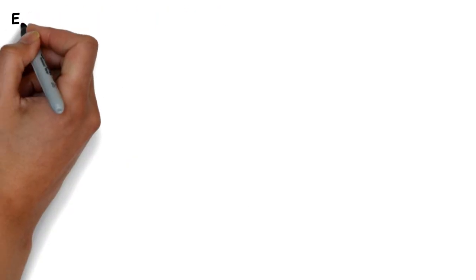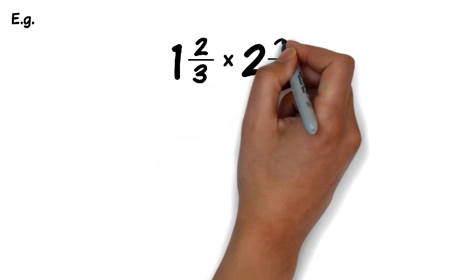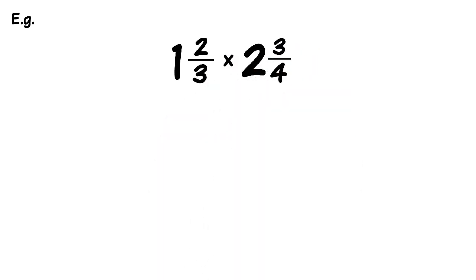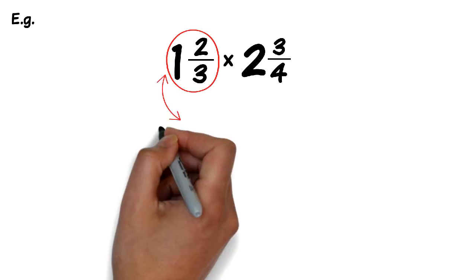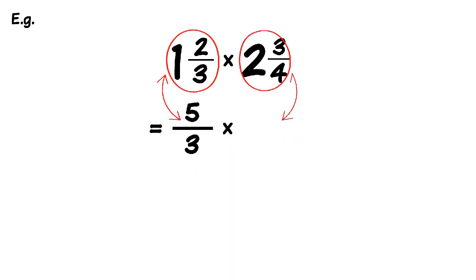Let's take a look at working with mixed numbers. Consider 1 and 2 thirds times 2 and 3 quarters. As we did in part 1, it's easier to convert these mixed numbers into improper fractions. So 1 and 2 thirds becomes 5 over 3, and 2 and 3 quarters becomes 11 over 4.